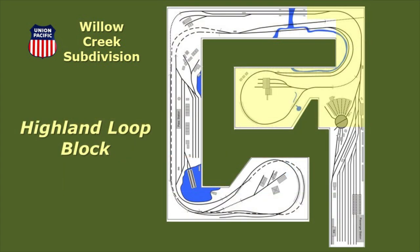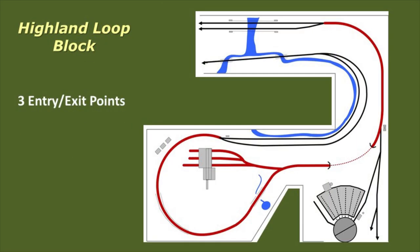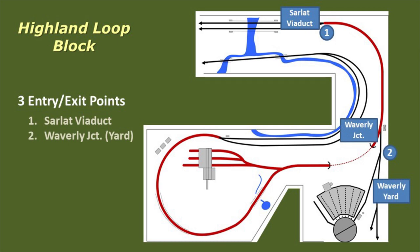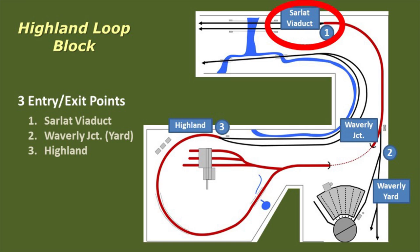Here's a track diagram of Highland Loop Block with entry-exit points at Sarlott Viaduct, Waverly Junction, and Highland. If a train is heading for Waverly Yard, it must wait at Sarlott Viaduct until the yardmaster gives the signal to proceed.